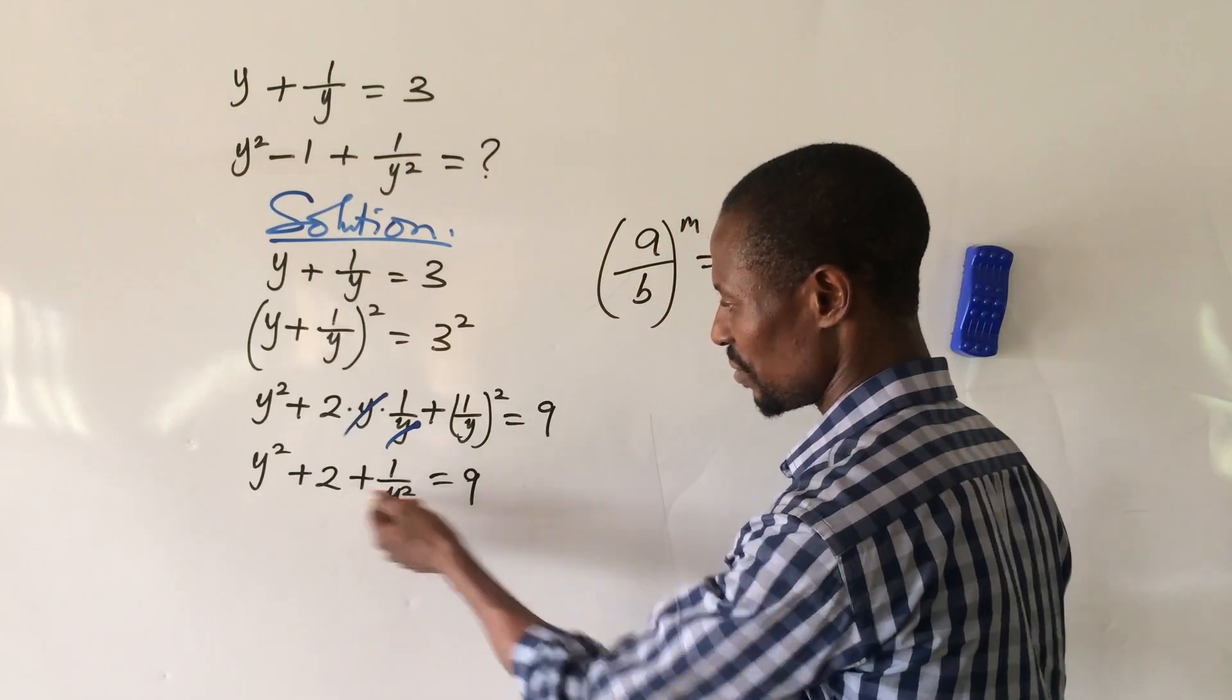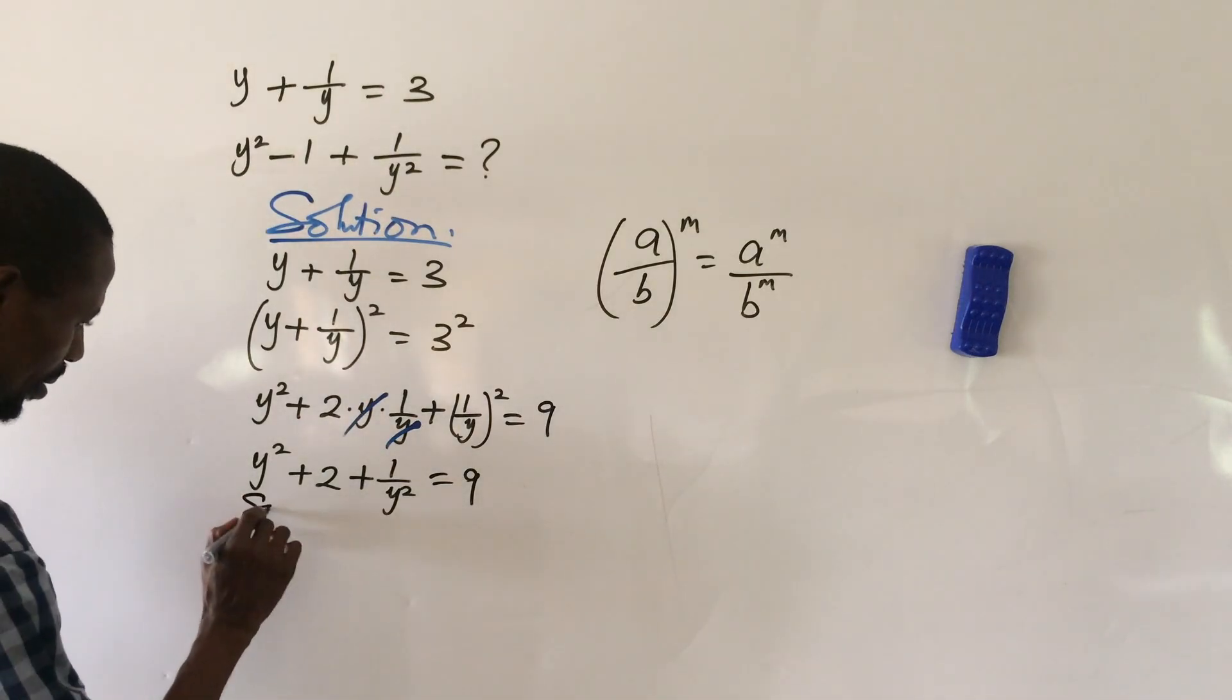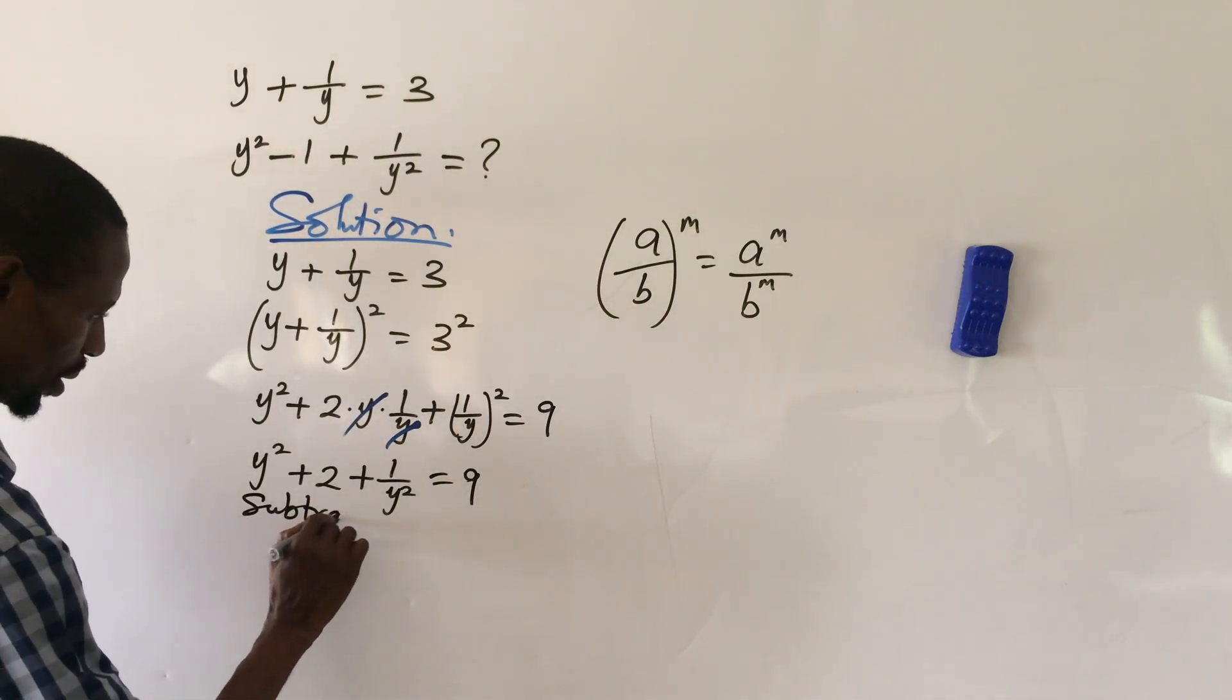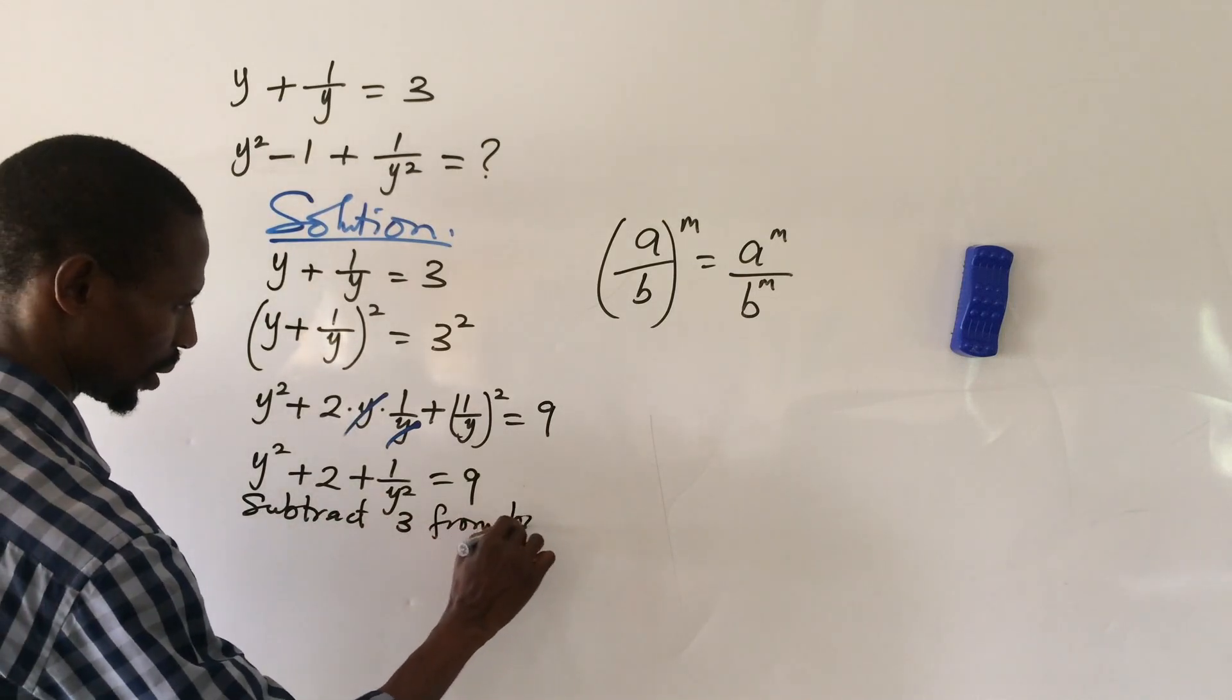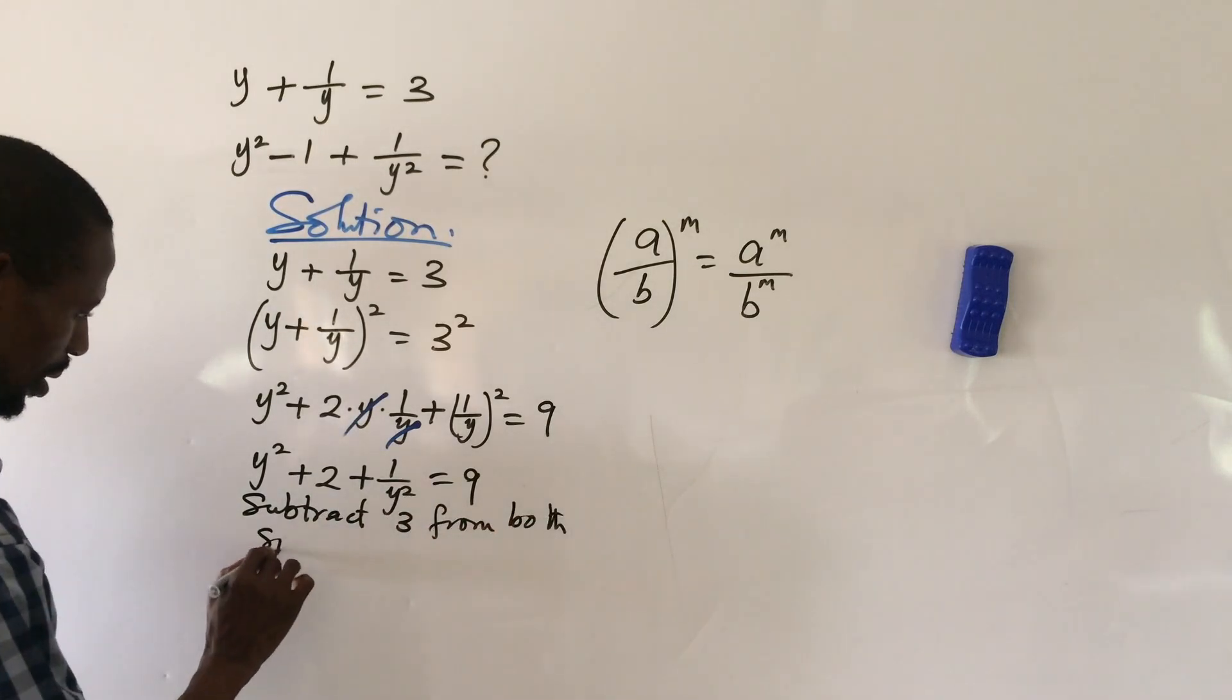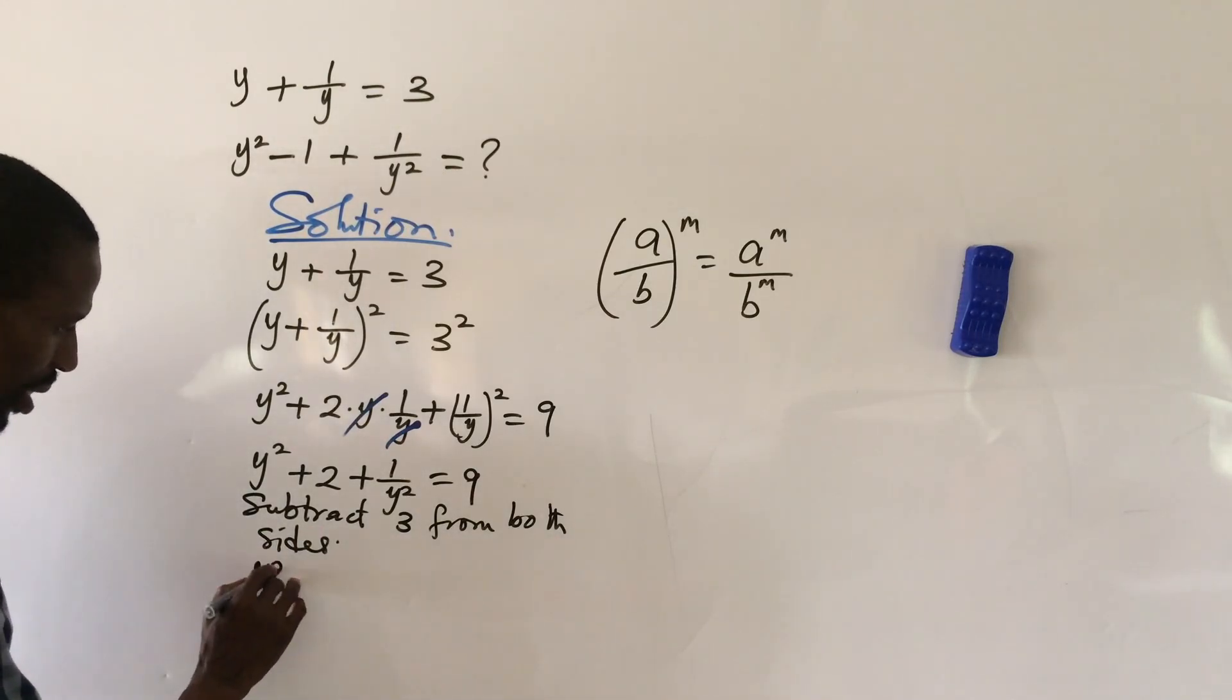So from here, let's say subtract 3 from both sides. If you do that, we're going to have this to be y squared plus 2 minus 3 plus 1 over y squared equals 9 minus 3.